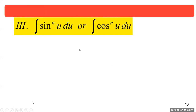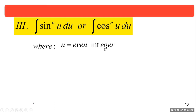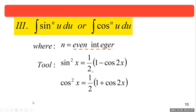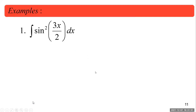Let's go to the third case. If you have the integral of sine to the n of u du or cosine to the n of u du where n is even, the tool changes. Recall: cosine squared x equals one-half of (1 plus cosine 2x), and sine squared x equals one-half of (1 minus cosine 2x). For example, the integral of sine squared of 3x over 2 — it's squared, so we apply the tool: one minus cosine of two times the angle.